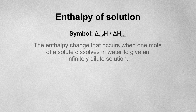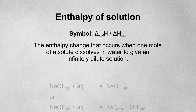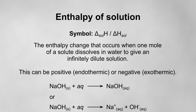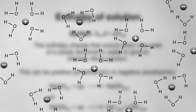The enthalpy of solution is the enthalpy change that occurs when one mole of a solute dissolves in water to give an infinitely dilute solution — a solution so dilute that adding more solvent wouldn't change the solute concentration. For example, this equation shows the enthalpy of solution for sodium hydroxide. The enthalpy of solution can be either positive or negative. Before the solute dissolves, two things must happen: the solute bonds must be broken and the water's intermolecular forces must be broken — both endothermic. Then attractive forces form between the solute and water molecules, which is exothermic. The overall sign depends on the balance between these two processes.